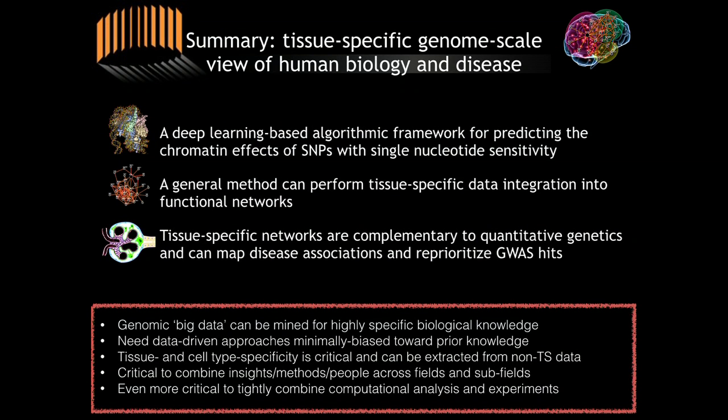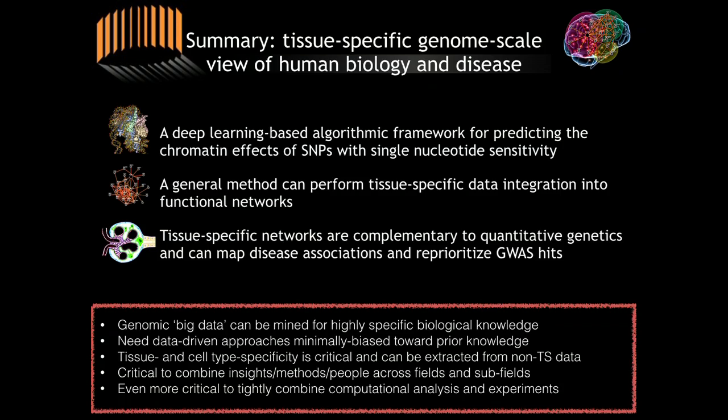In conclusion, genomic big data can be mined for highly specific biomedical knowledge. We need data-driven approaches, minimally biased toward prior knowledge while remaining aware of those biases. It is critical to account for cell lineage and tissue specificity in complex human disease, and to combine computational, experimental, and clinical approaches integratively — not as pre- or post-processing steps, but as an integrated loop to address these questions.